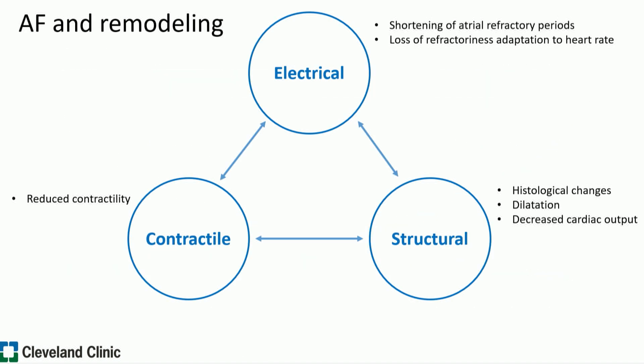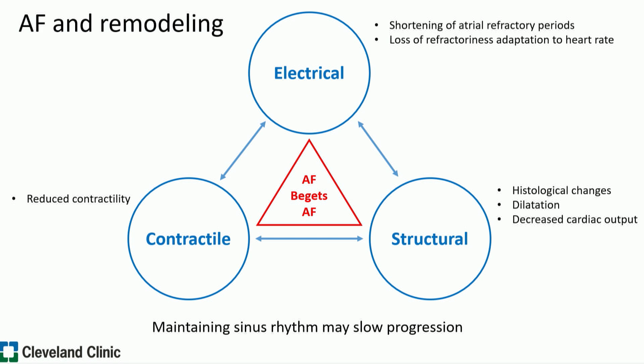We know that AFib leads to structural and electroanatomical remodeling over time, and this mechanism is what leads to the concept of AFib begets AFib. The more and the longer history you have of AFib, the more structural changes you have, and it becomes much harder to control. It is conceptually reasonable to believe that maintaining sinus rhythm early in the process may actually slow progression, and there are some data that suggest that is the case.